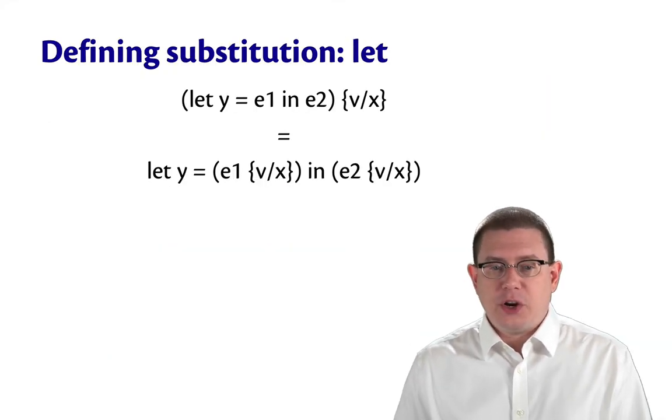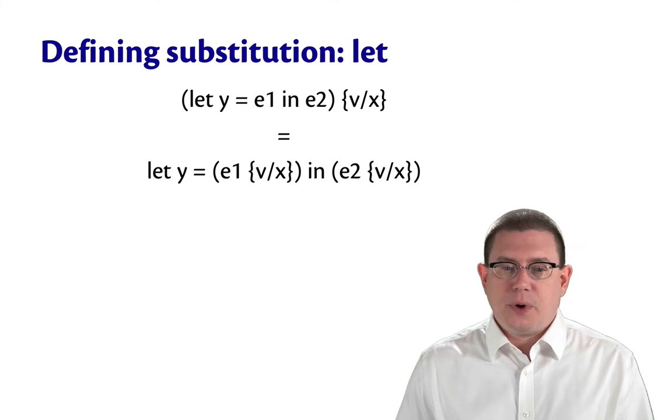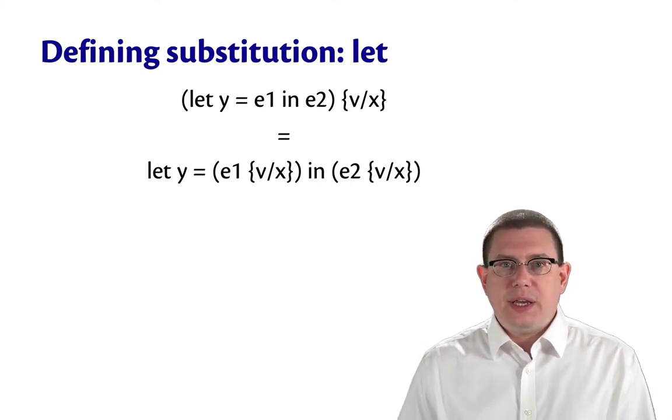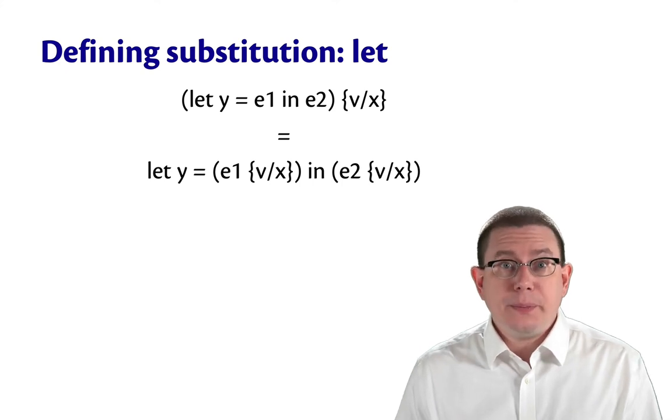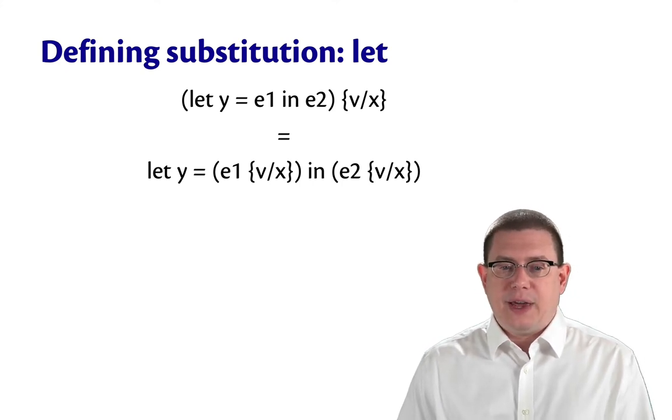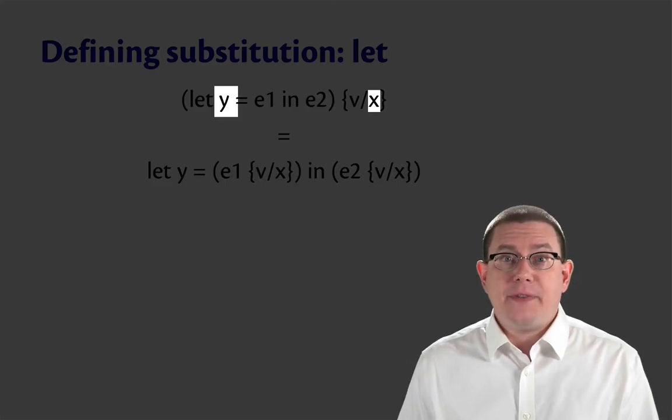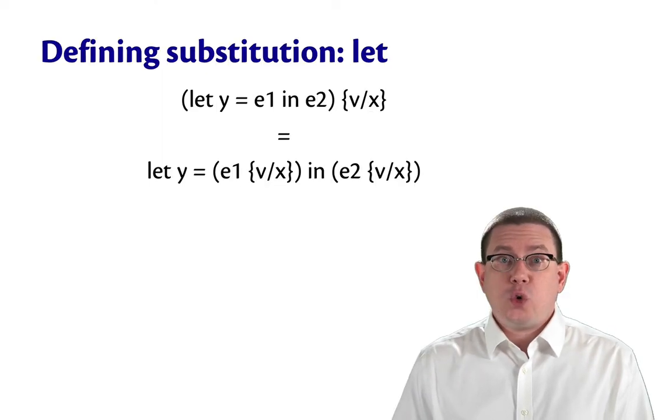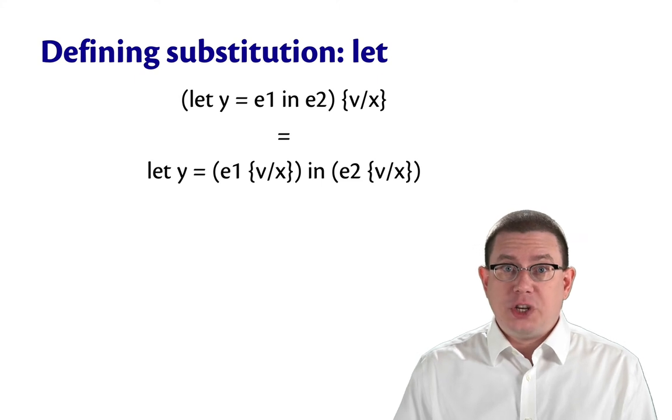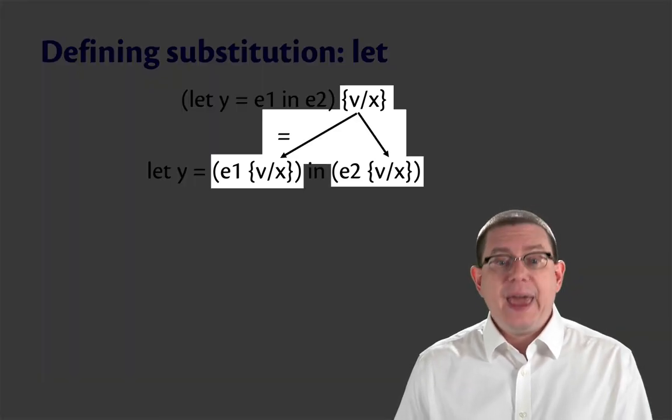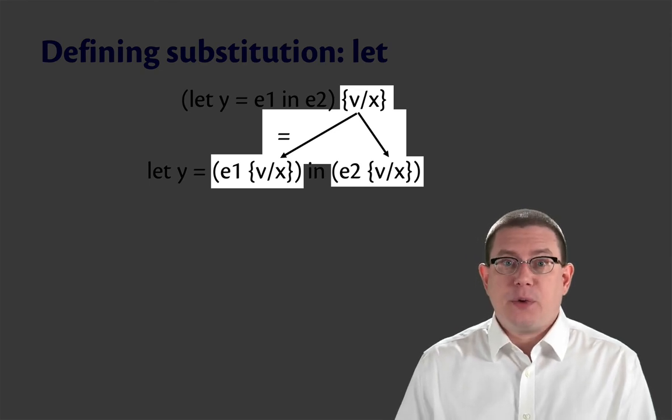And now the let expression, which is what we went through those examples for. If you have let y equal e1 in e2, and you're substituting v for x inside of that, then since y is not the same variable name as x, you go ahead and do that substitution in two places. You do it in the binding expression e1, and you do it in the body expression e2.